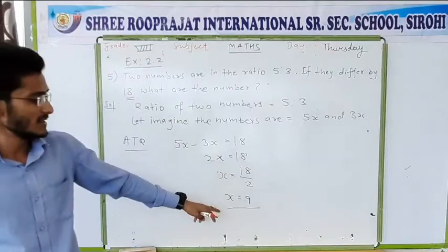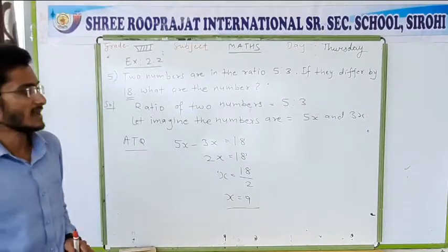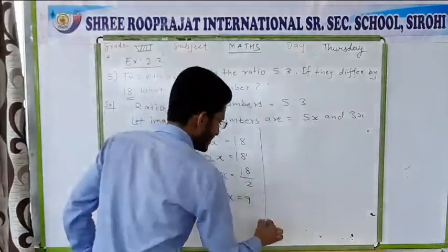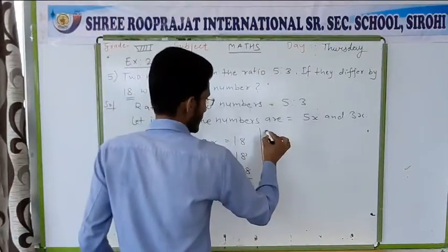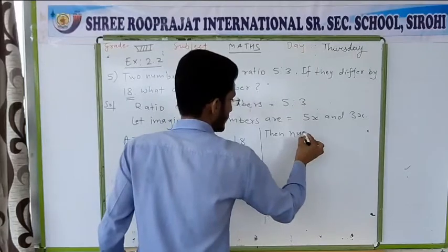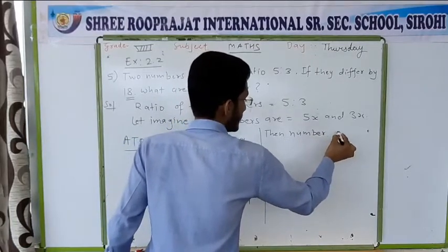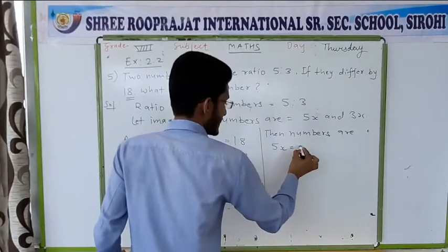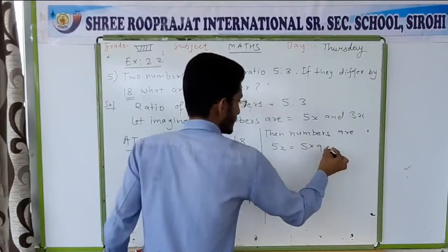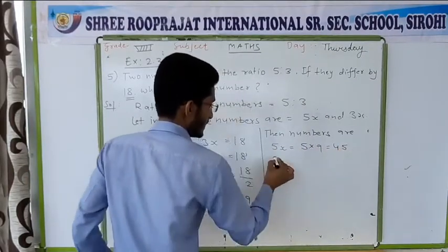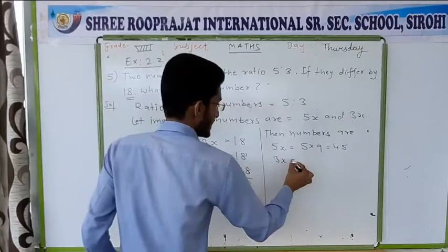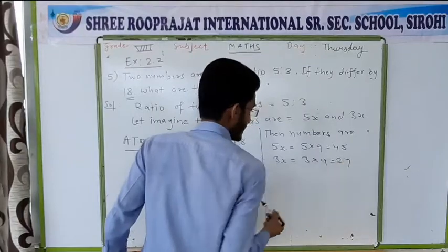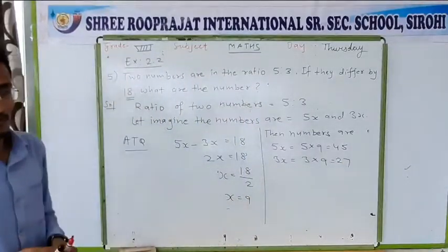That means the divisor we used is 9. If the value of x is 9, then the numbers are: the first number is 5x, that means 5 into 9, which gives 45. The second number is 3 multiplied by x, that means 3 into 9, which gives 27. So the numbers are 45 and 27.